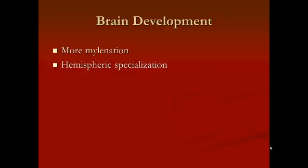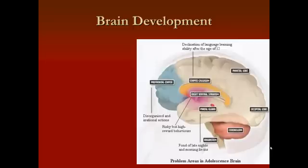Moving on to brain development, there are some really fascinating things happening in the teen brain. We see more myelination, and also hemispheric specialization — where parts in each side of the brain become very specialized in the job they do. For example, centers of the brain in charge of language are in the left hemisphere for most people. The corpus callosum — the band connecting the left and right hemispheres — undergoes changes during puberty that decrease the ability to learn language, which connects back to the sensitive period hypothesis associated with language acquisition.